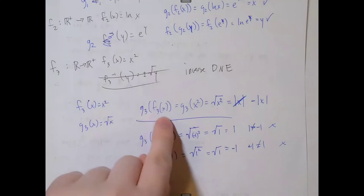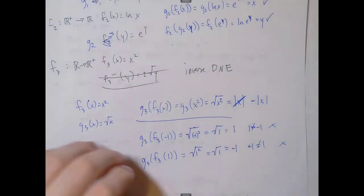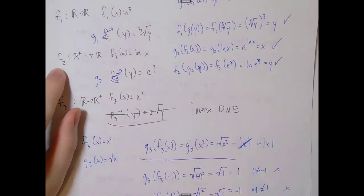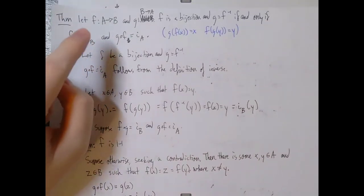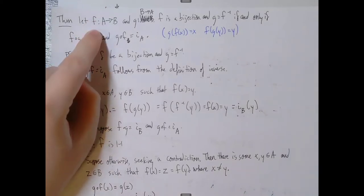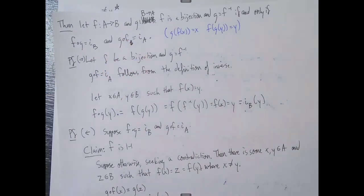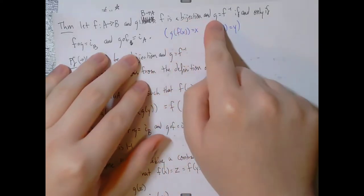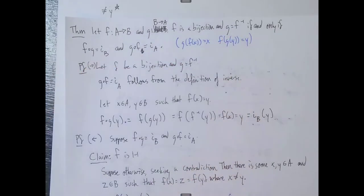The whole point is to be able to say with mathematical rigor: because these two composition properties are satisfied, g equals f⁻¹. This is an if-and-only-if proof, so let's prove one direction. The forward direction — assuming f is a bijection and g = f⁻¹ — is much easier and quite short.